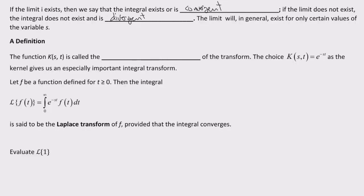Which brings us to a new definition. The function k of s of t is called the kernel of the transform. The choice k of s of t equals e to the negative st as a kernel gives us an especially important integral transform.